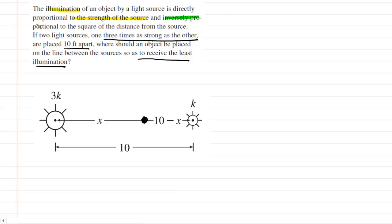So let's go back now and investigate this idea that illumination of this light source is directly proportional to the strength of the light source, but it's also inversely proportional to the square of the distance from the source. Let's try to capture that in an equational form.